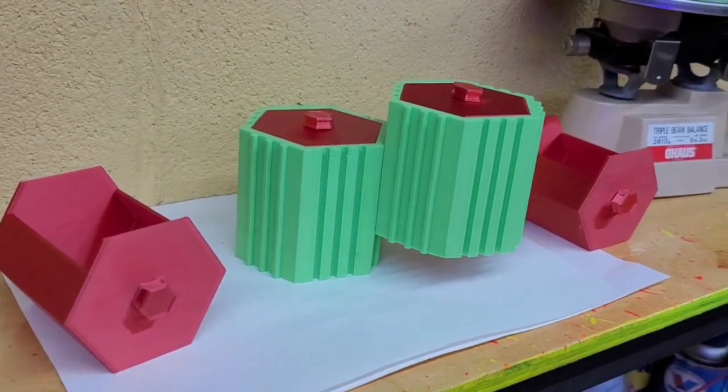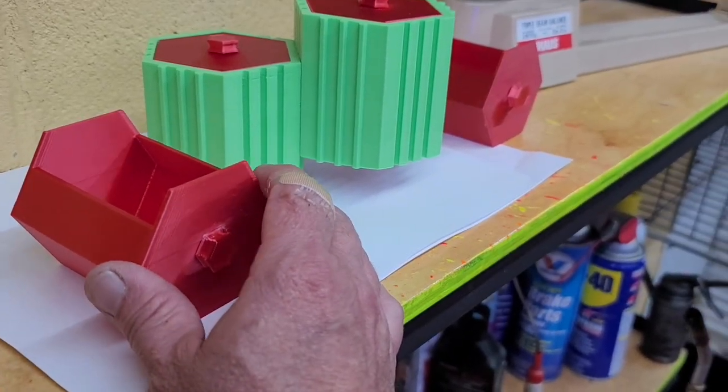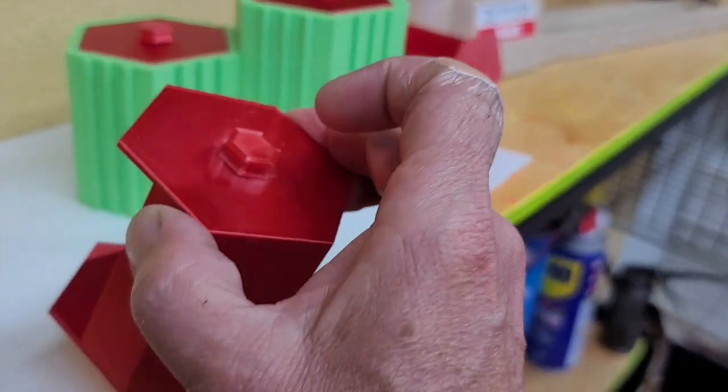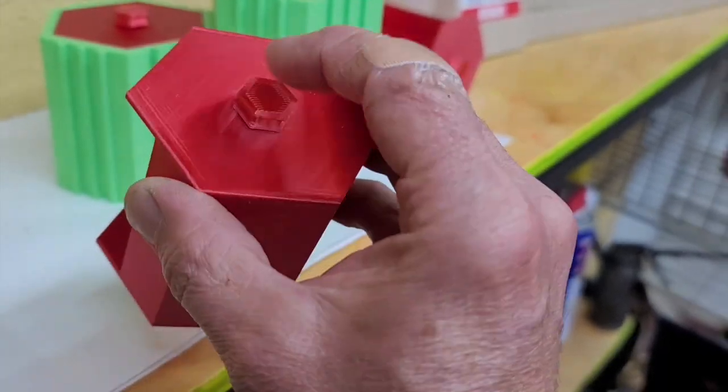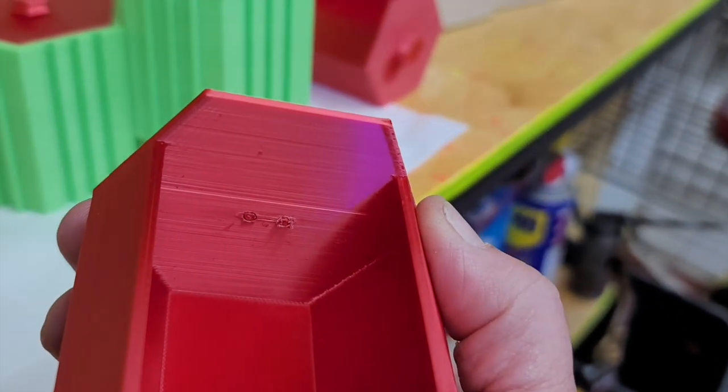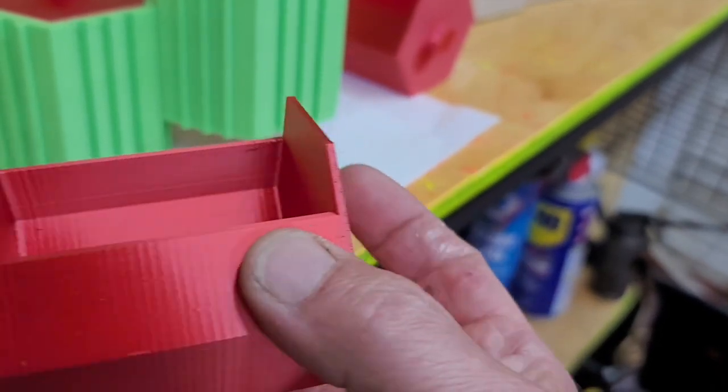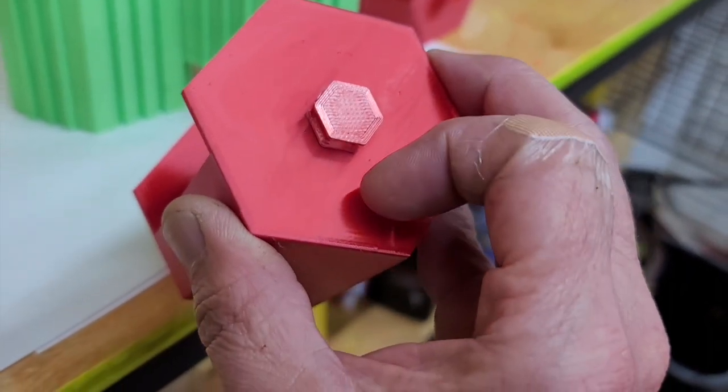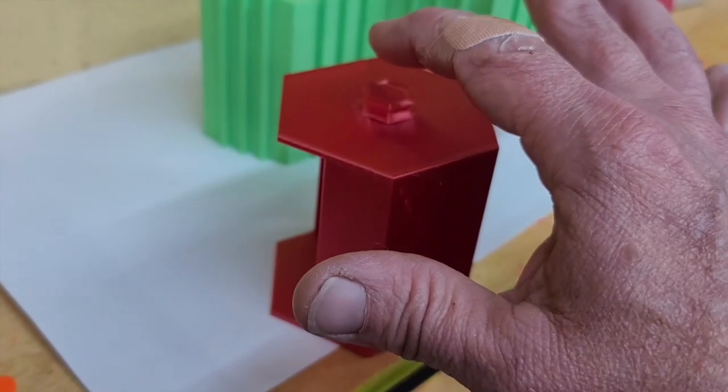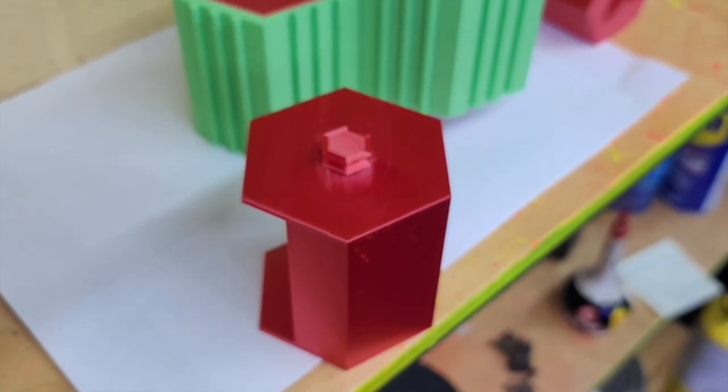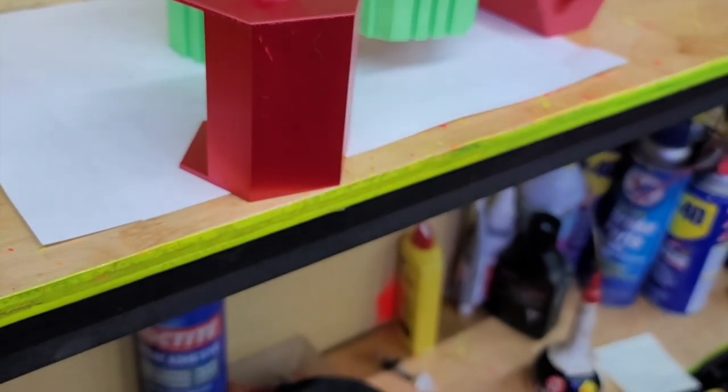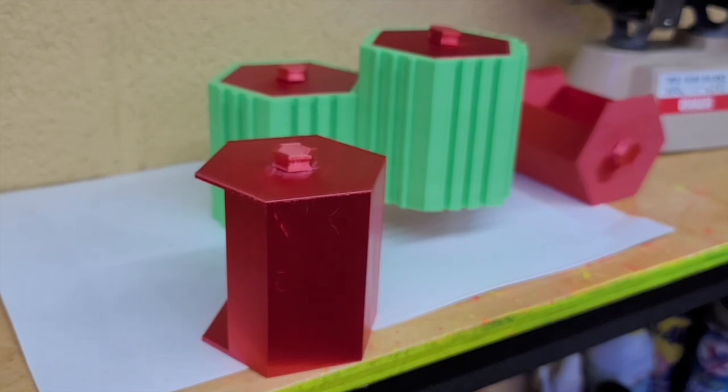Dan says that when you make the drawers you need to make them at 99%, but he doesn't mention what to do with the handles. The handles have a little peg on the back that goes into the drawer. If the drawer is at 99%, what is the handle at? I left it at 100% and it does fit correctly when you leave the handle at 100% and make the drawer at 99%. Keep that in mind when you do your slicing, it's very important.